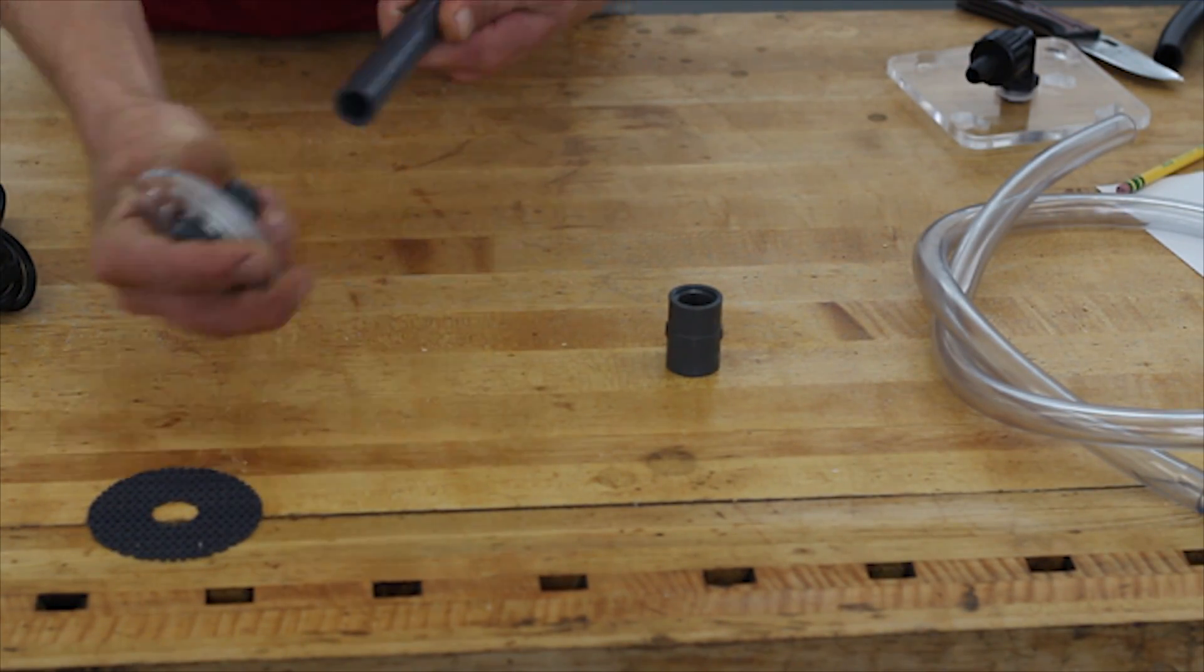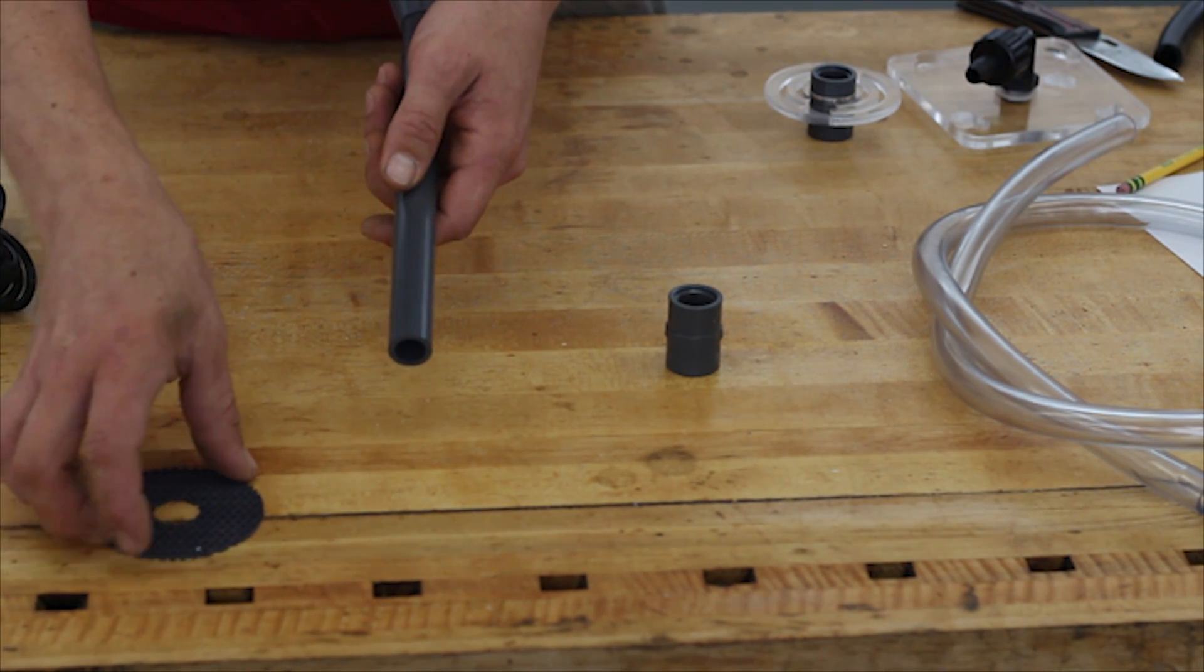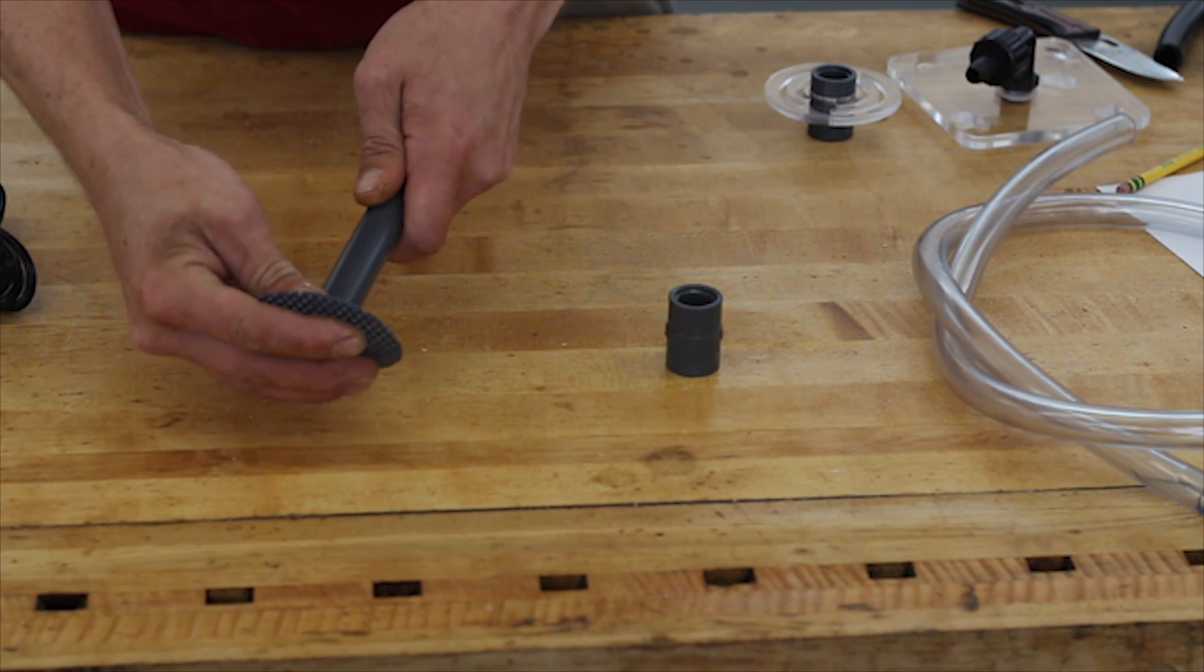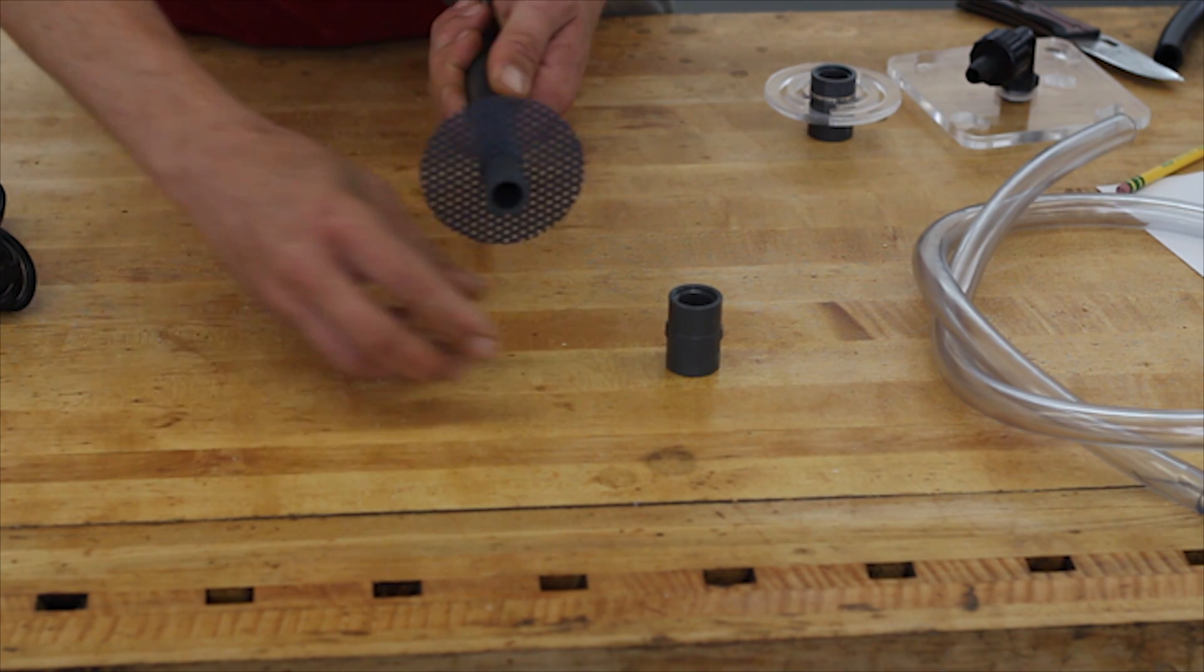Let's get the down tube ready. Remove the top media plate and set aside. Place the new rigid screen on the down tube and then the new coupling.